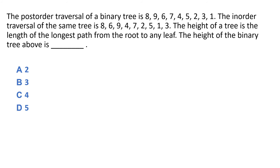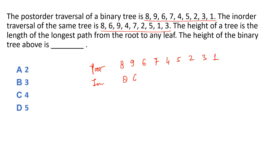Is question mein binary tree se related hai — post-order traversal given hai aur in-order traversal bhi given hai, aur height batani hai. Post-order: 8, 9, 6, 7, 4, 5, 2, 3, 1. In-order: 8, 6, 9, 4, 7, 2, 5, 1, 3. Post-order ka last node root node hota hai — toh 1 is the root node.